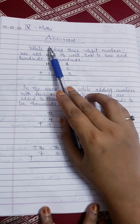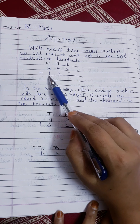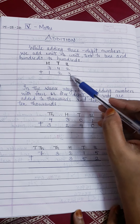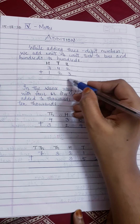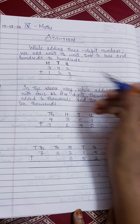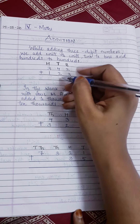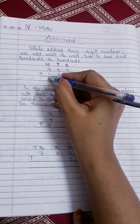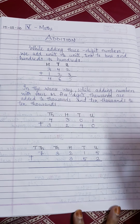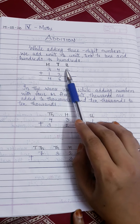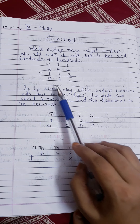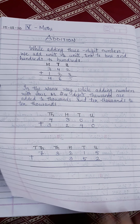Here, three hundred forty-two and one hundred and twenty-three. Two plus three is five. Four plus two is six. Three plus one is four. So the addition of both these numbers is four hundred and sixty-five.